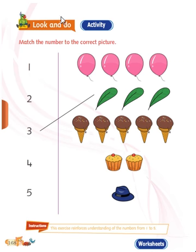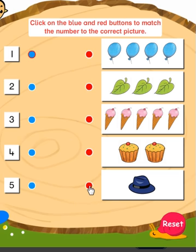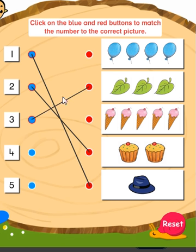Now there is one more activity. You see — where is the one object? You must match it correctly. Where is the two object? You see, match it. Three, four — this one is five.